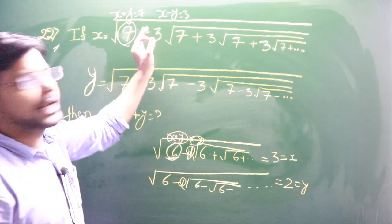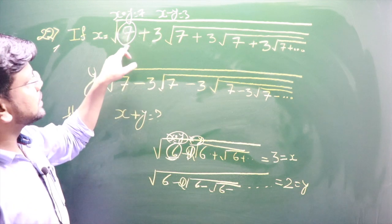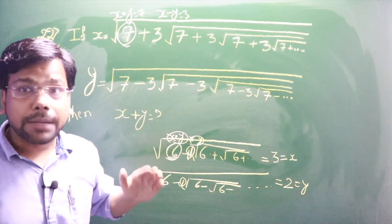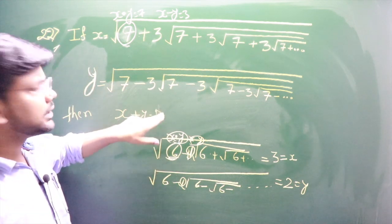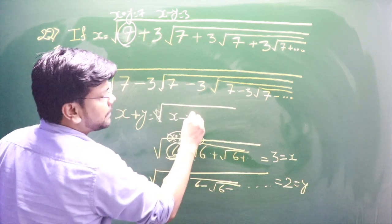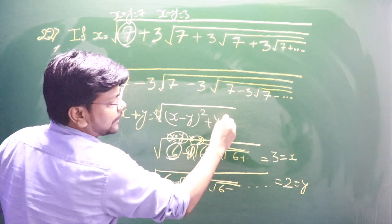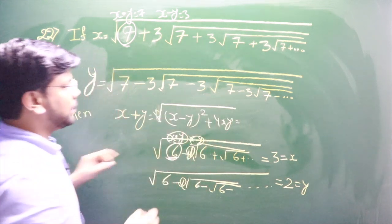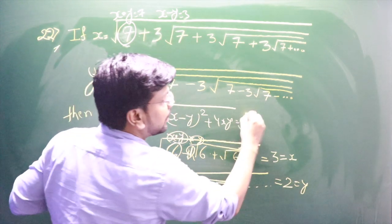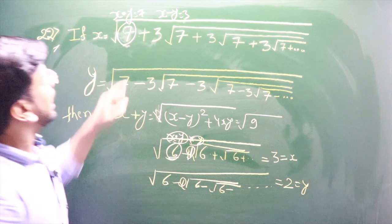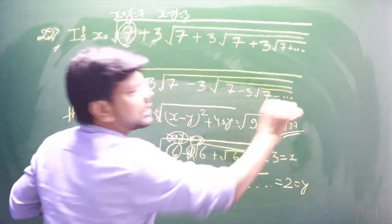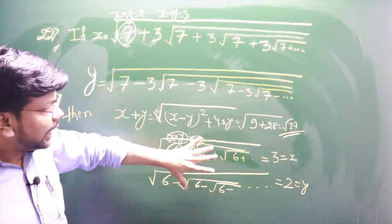It will hardly take you a second to identify: all plus means this is x·y, the difference term is x − y. Given that data, what we are asked is x + y. The formula for x + y is: (x − y)² = 9, and 4xy = 4 × 7 = 28, so x + y = root of (9 + 28) = root 37.